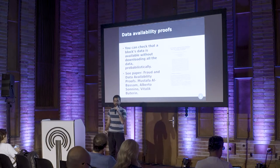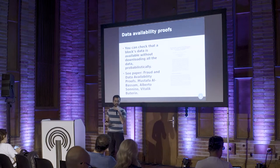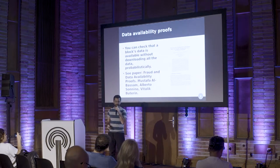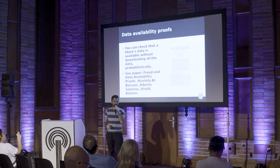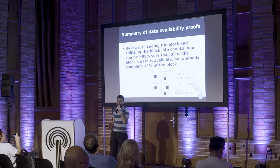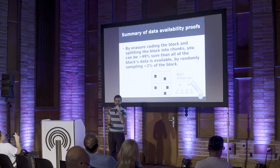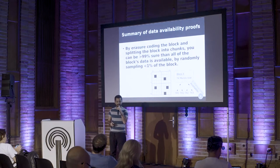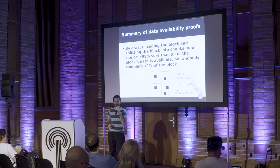You can actually check that some piece of data is available without needing to download all that data. You can do this probabilistically using something called data availability proofs. There's a paper on the archive that I co-authored with Alberto from UCL and Vitalik. The basic idea is that you create an erasure-coded version of the block, and nodes can verify that the block is available by randomly sampling different chunks from the block. That can give them a very high guarantee — like 99.99% or even higher — that the entire block is available, just by sampling a few chunks.